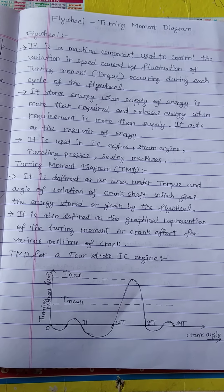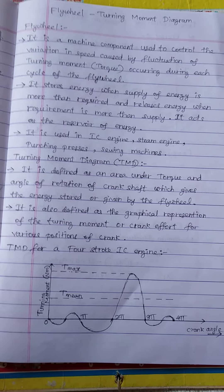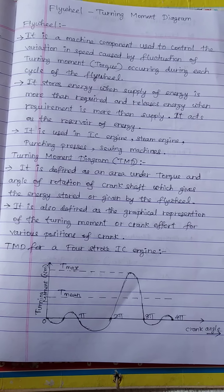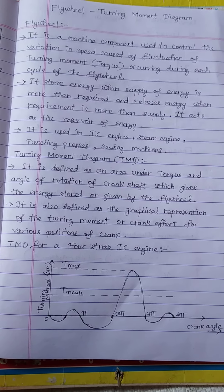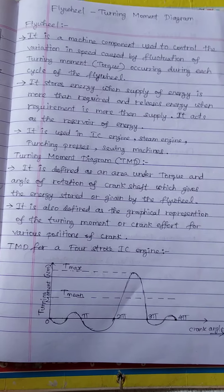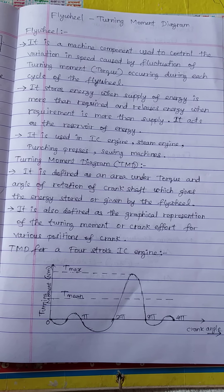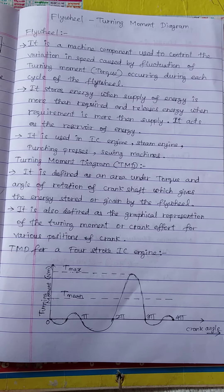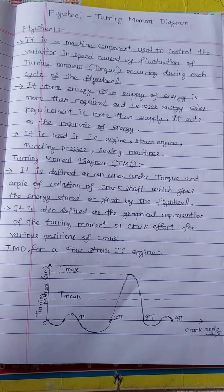Flywheel is used to absorb the energy during the power stroke and release the energy during the other strokes. Because in IC engine, we have only one power stroke, but we have continuous motion because of the flywheel.